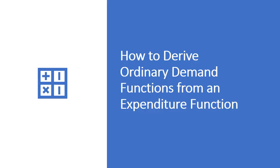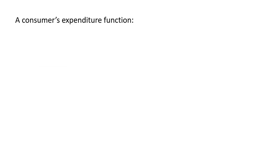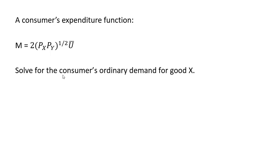Here we're going to look at how to derive an ordinary demand function from an expenditure function. A consumer's expenditure function is given by the following: M is income and it equals 2 times the price of good x times the price of good y, where these prices are raised to the 1/2 power, multiplied by utility ū. We want to solve for the consumer's ordinary demand for good x.